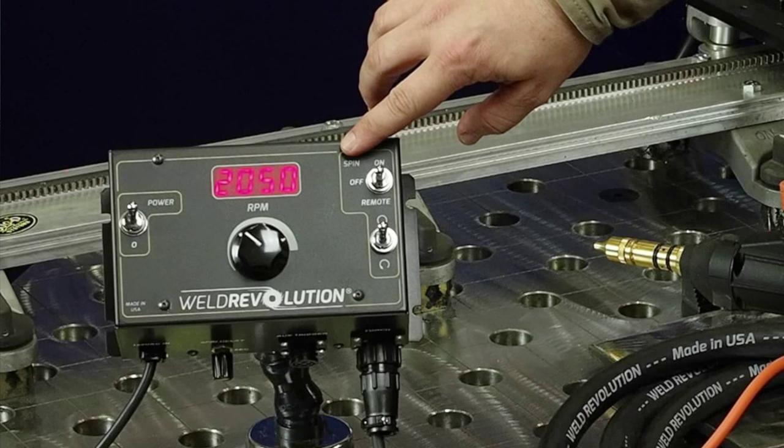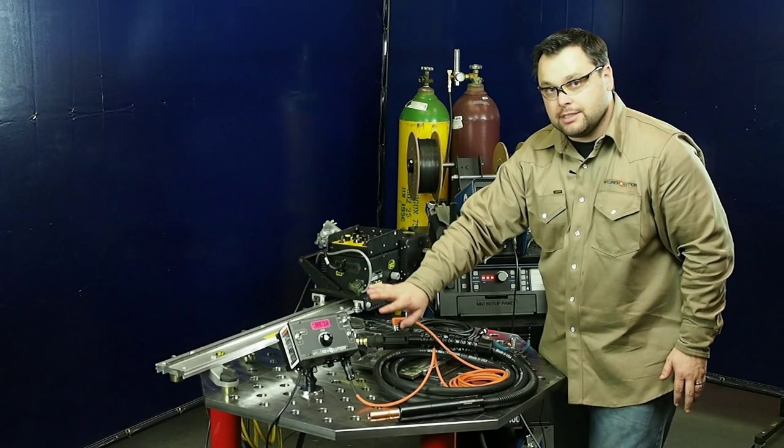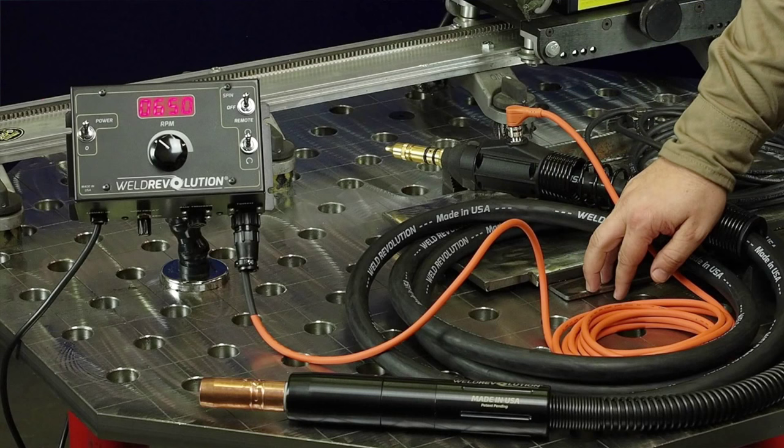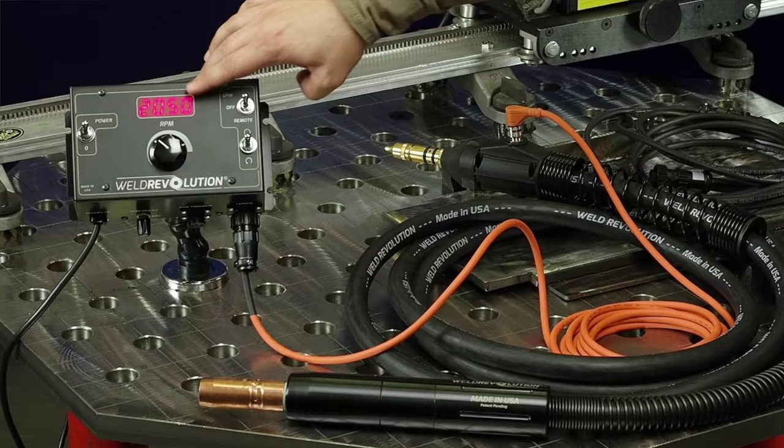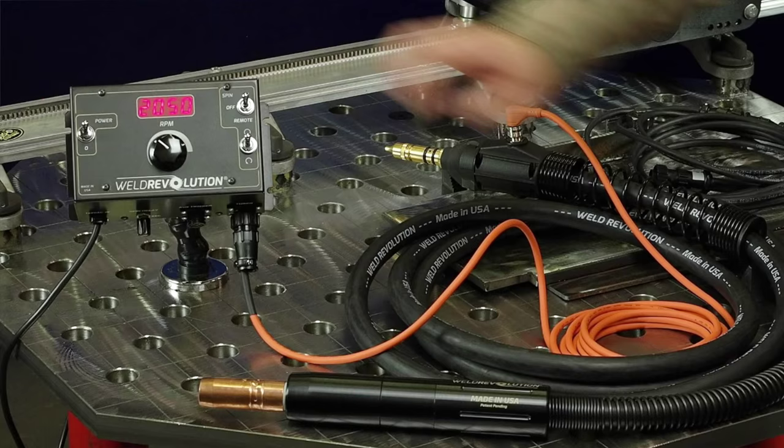You have a couple other knobs on here: the spin, which turns the spin on or off, and direction. Earlier I said you can operate this in a manual mode. If that's the case, then you just turn it on. There's a motor in here that's starting to activate and turn, and it's come up to speed.